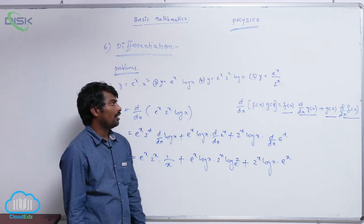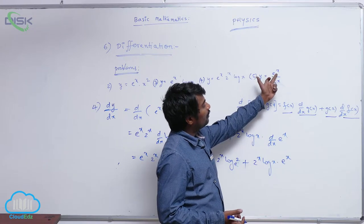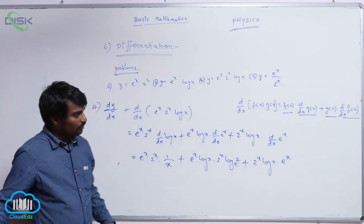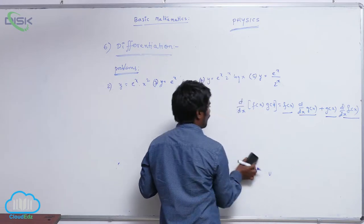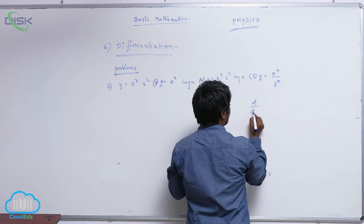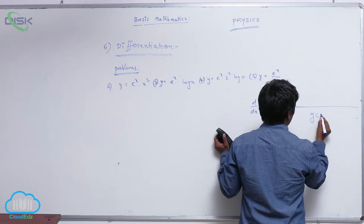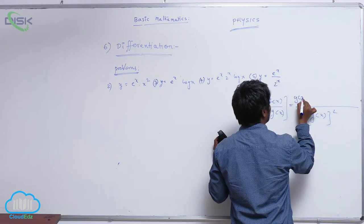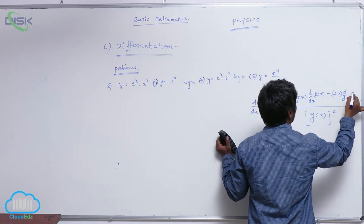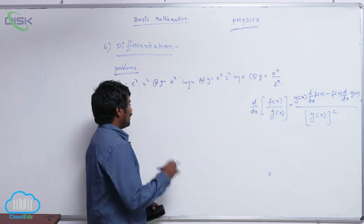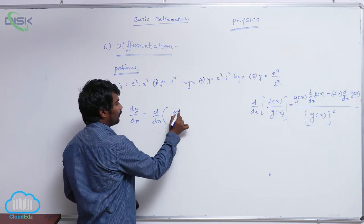The fifth problem is y equal to e power x by 2 power x. This is like f of x by g of x, so we use the quotient rule. The formula for d by dx of f of x by g of x is: g of x into d by dx of f of x, minus f of x into d by dx of g of x, all divided by g of x whole square.